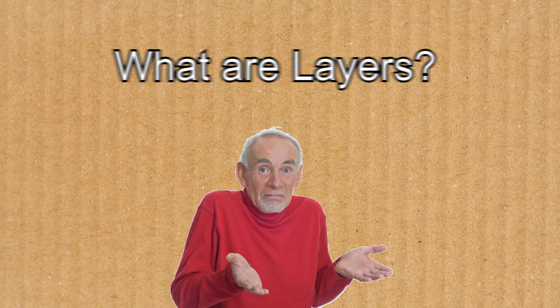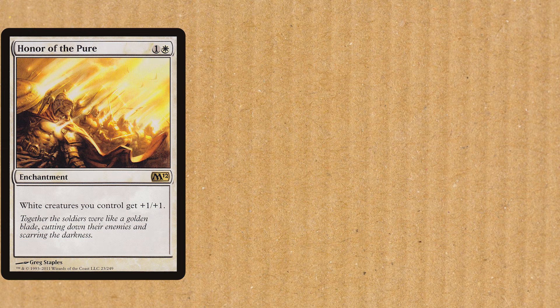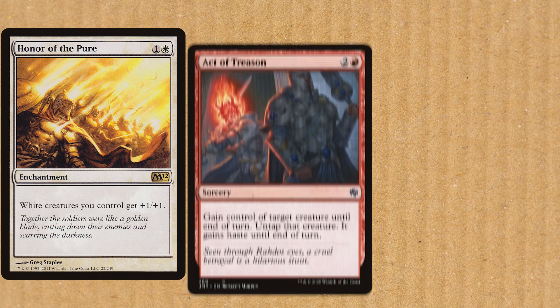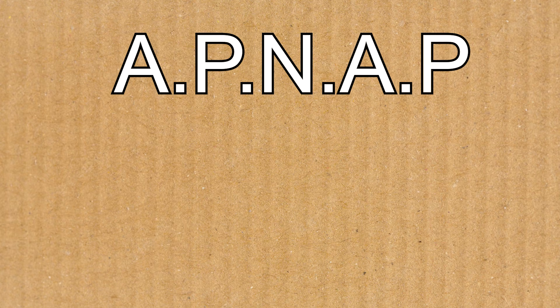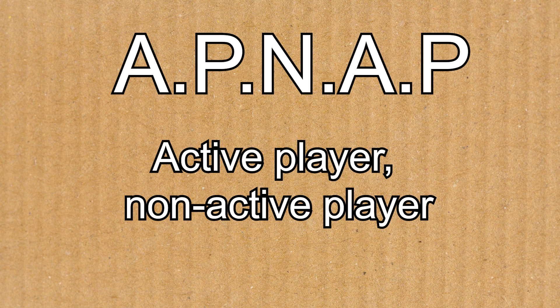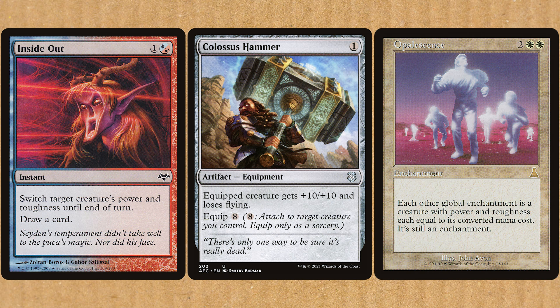So what exactly are layers and why should you care? Effectively, layers are the order in which continuous effects apply themselves to a game state, whether that's static abilities like Honor of the Pure, or until-end-of-turn effects like Act of Treason or Giant Growth. This is similar to how we have BAPNAP to know which order to resolve multiple triggered abilities that occur at the same time, and depending on the order, layers are applied can cause some pretty interesting interactions.